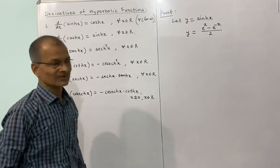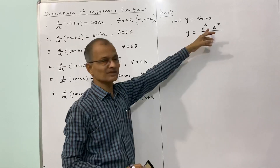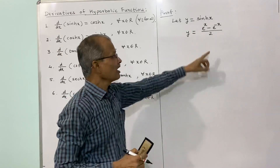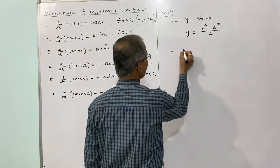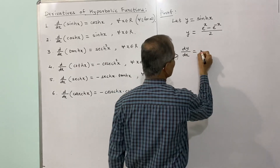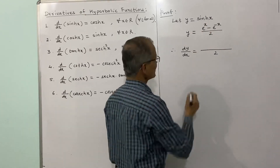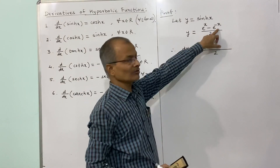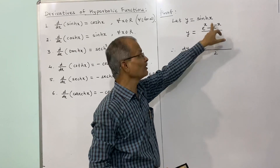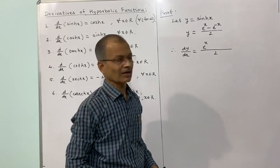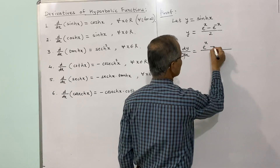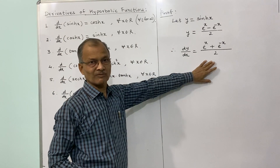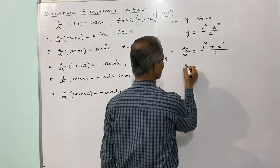Therefore, what is the derivative of this? We know the rules of differentiation for exponential functions. The derivative of e to the power x is again e to the power x, and the constant one-half remains. For e to the power negative x, we apply the chain rule: the derivative is e to the power negative x multiplied by the derivative of negative x, which is negative 1. So the two negatives become positive, giving plus e to the power negative x. This result is exactly the definition of hyperbolic cos x.